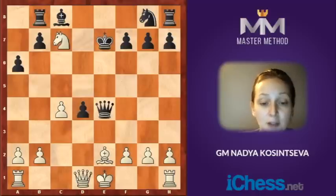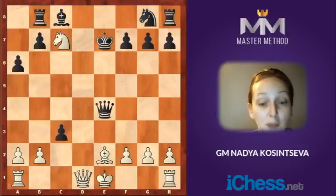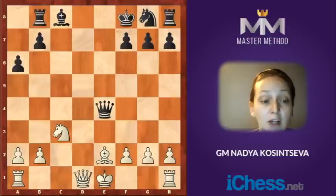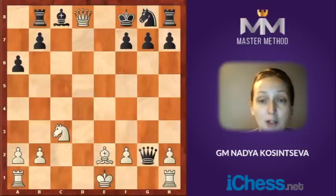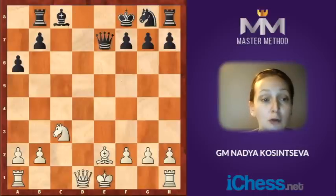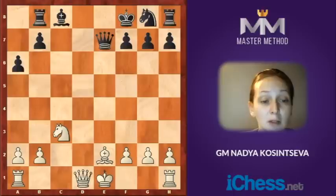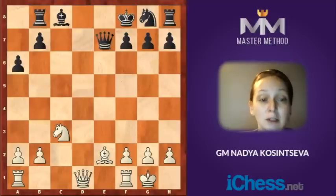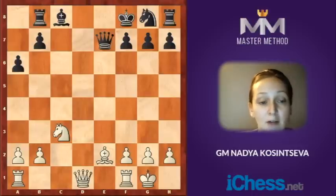Let's try d takes on c3 instead. We don't want to retake this pawn automatically. Instead we consider forcing lines first, and we can easily notice that after knight d5 check, king f8, knight takes on c3 — black cannot take the pawn on g2 in view of queen d8, checkmate in one. So black has to take control over the d8 square — queen e7, for example — and after short castle, there is no need to further calculate. Obviously, white has better chances here due to his lead in development, more active pieces, and the unsafe position of the black king.